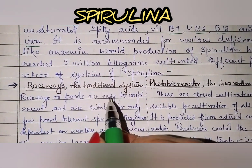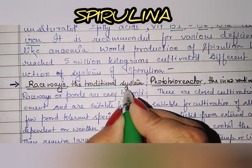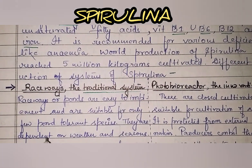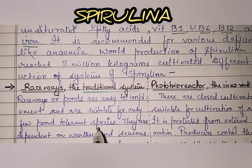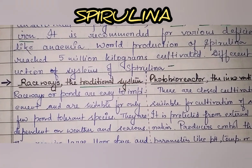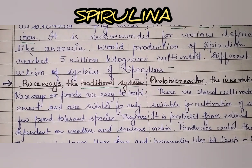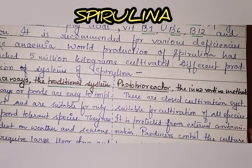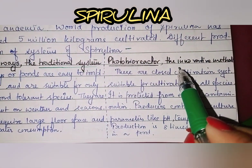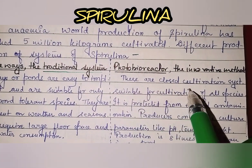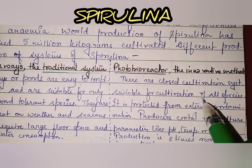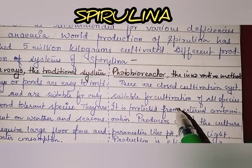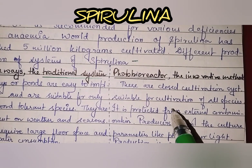The first production system is the traditional system — raceways or ponds. These are easy to implement and suitable for only a few pond-tolerant species, not for everything. They are dependent on weather and seasons and require large floor space and high water consumption. In contrast, the photobioreactor is the innovative method — these are closed cultivation systems suitable for cultivation of all species, with no external disturbances, and therefore not specific to any particular type of algae.